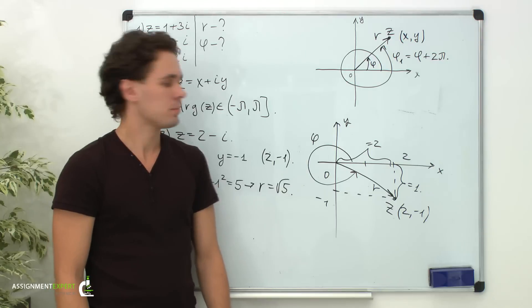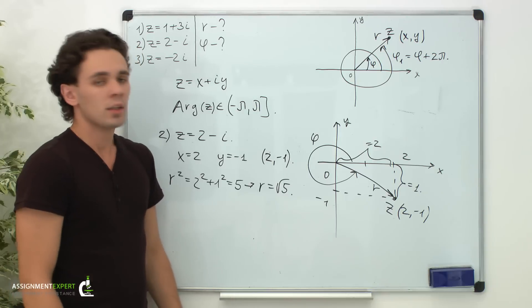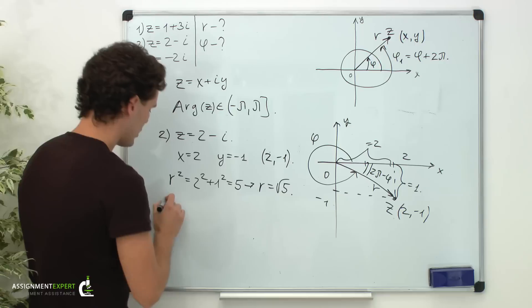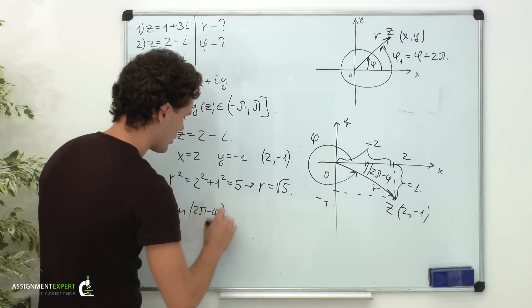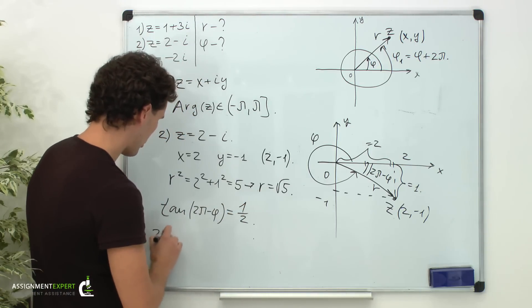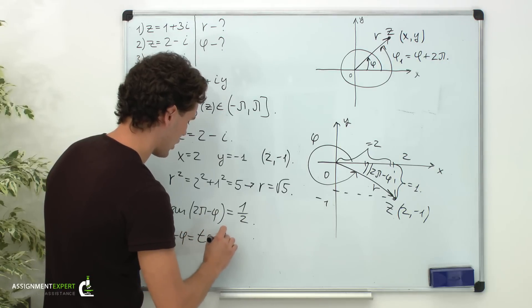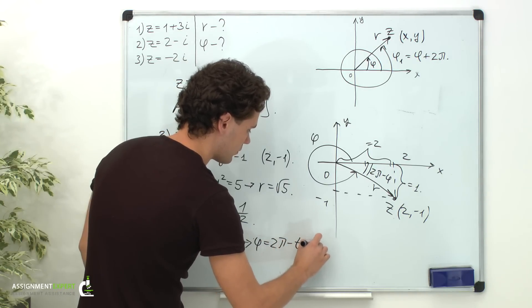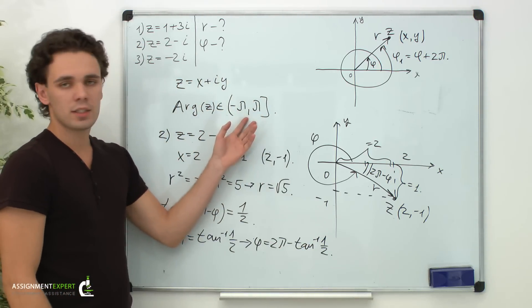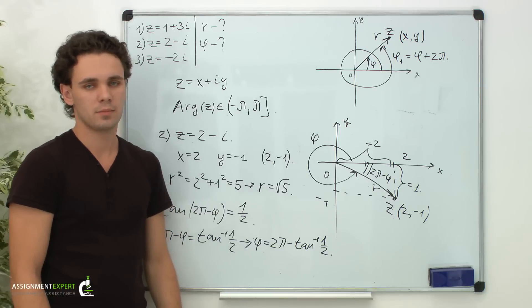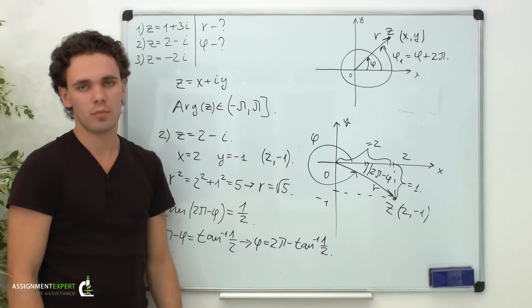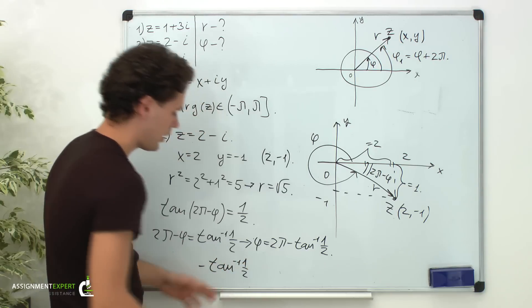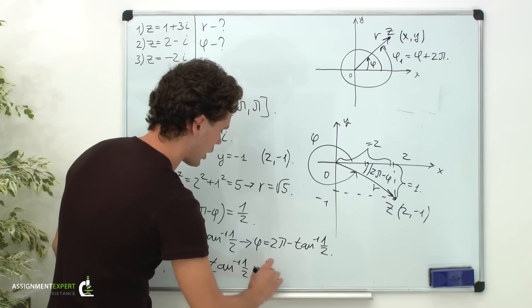Now let's find the argument of this complex number. As we can see, phi is a reflex angle. To make our calculations simpler, let's consider the acute angle 2 pi minus phi. From the same triangle, the tangent of this angle equals 1 over 2. Therefore, 2 pi minus phi equals the inverse tangent of one half, and phi equals 2 pi minus the inverse tangent of one half. This value is not inside the principal argument interval, so we subtract 2 pi to get negative inverse tangent of one half, which is inside the interval and is therefore the principal argument.